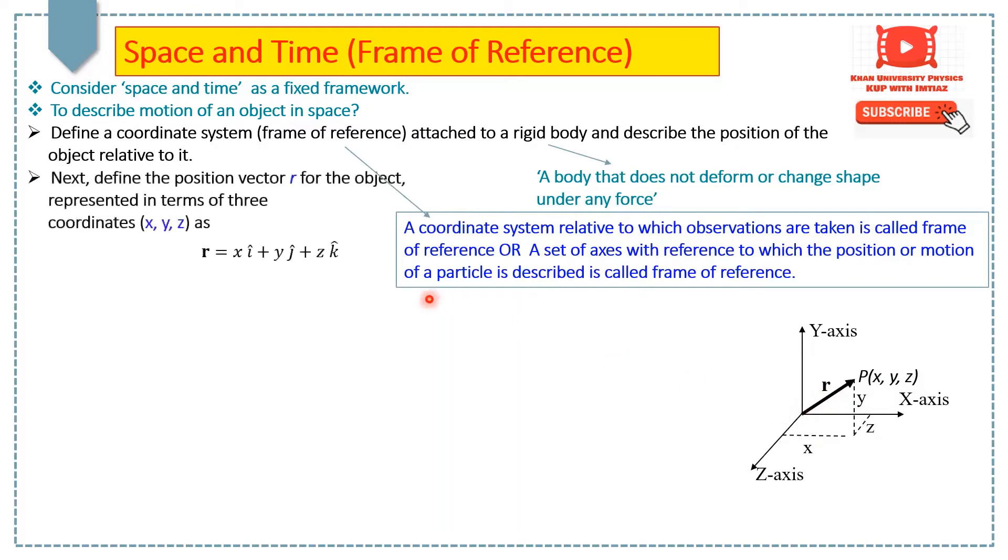So, to define the position vector for this object at point p, we can write a position vector as r equals xi plus yj plus zk, where i, j, k are the unit vectors along x, y, and z axes.